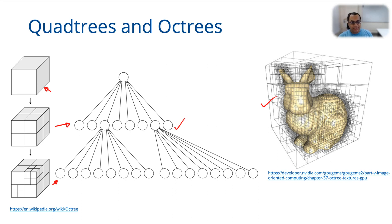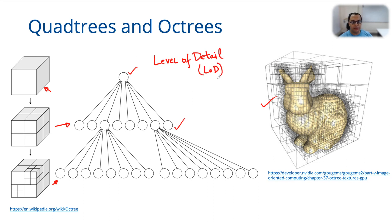Now, imagine if you represent a mesh of a bunny rabbit using just the root node — that is a very coarse approximation of this object, and that is the coarsest level of detail, or LOD. The root node of the octtree gives you the coarsest level of detail for the object. If you consider the next level of the octtree, it gives you a slightly finer representation, and each subsequent level gives a still finer representation until you reach the actual object itself, which is the highest resolution.